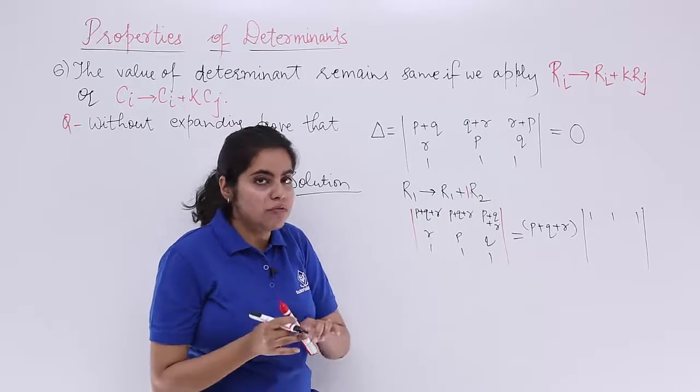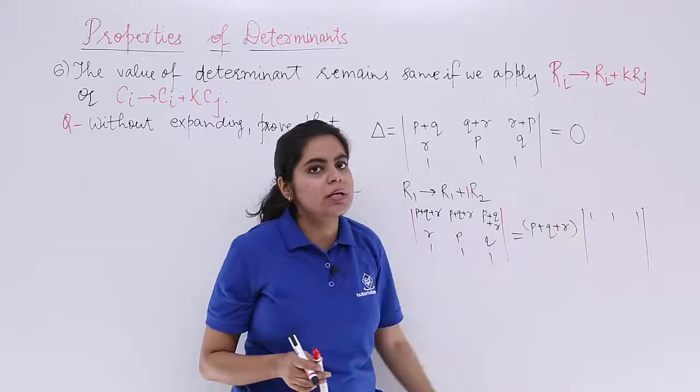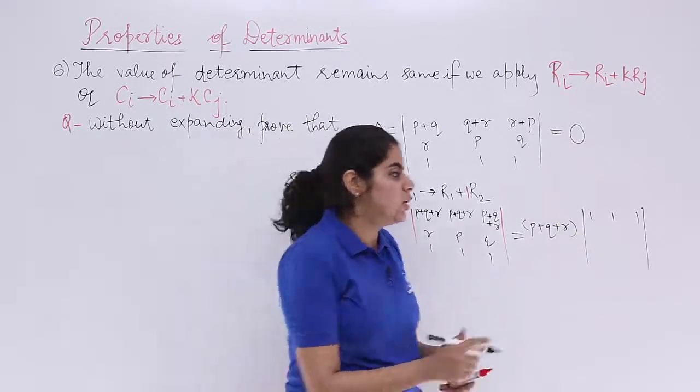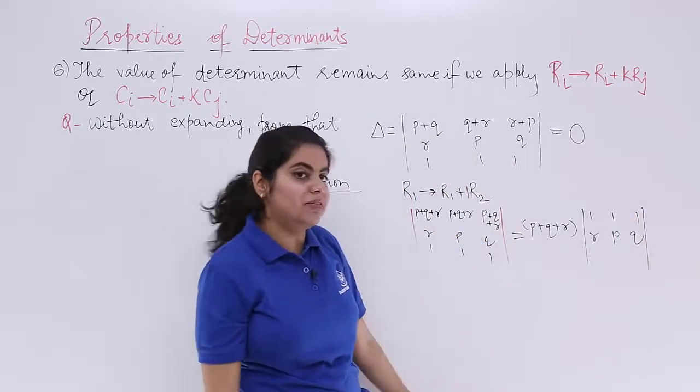Do not write 0. It is not 0. Why not 0? Because if you take out common and inside you write 0, then 0 into P plus Q plus R should have been 0. But it is not 0, right? Then R, P, Q. Last but not the least, you have 1, 1, 1.